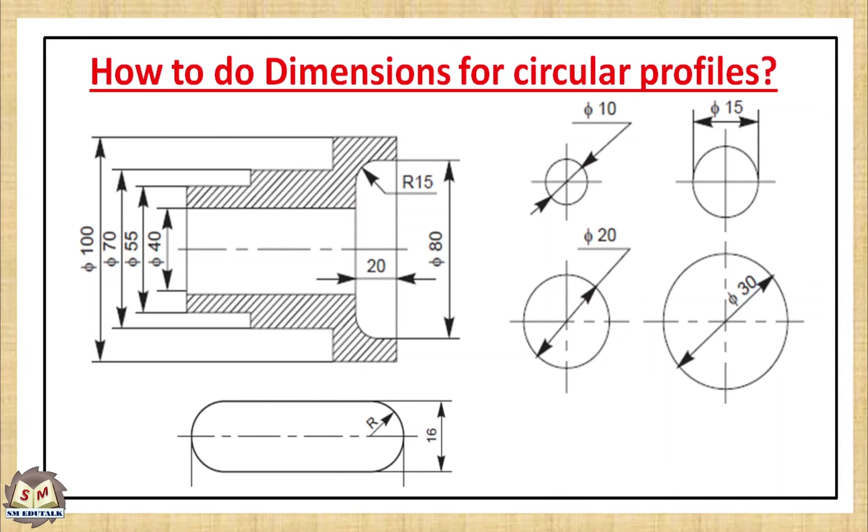How to do dimensions for circular profiles. Circular profiles diameters should be mentioned with a dimension value preceded by φ (phi). Here you can see the various ways to dimension a circle using its diameter. Like φ10, φ15, φ20, φ30. φ means diameter - so diameter 10, diameter 15, and so on.